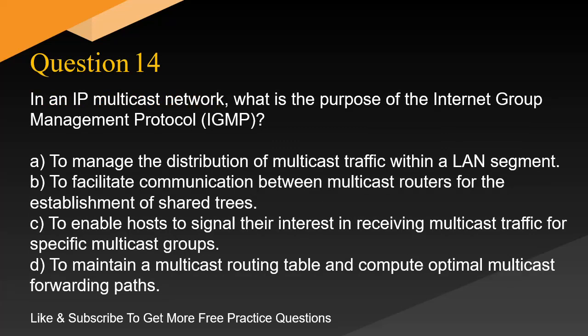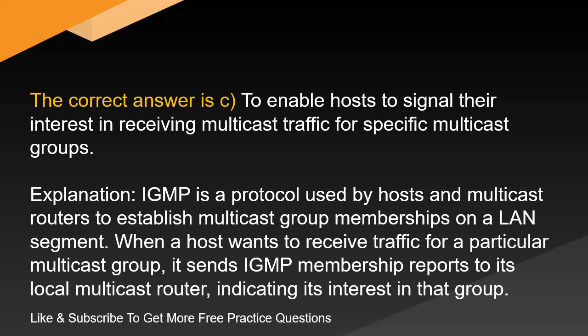Question 14. In an IP multicast network, what is the purpose of the Internet Group Management Protocol, IGMP? A. To manage the distribution of multicast traffic within a LAN segment. B. To facilitate communication between multicast routers for the establishment of shared trees. C. To enable hosts to signal their interest in receiving multicast traffic for specific multicast groups. D. To maintain a multicast routing table and compute optimal multicast forwarding paths. The correct answer is C: to enable hosts to signal their interest in receiving multicast traffic for specific multicast groups. IGMP is a protocol used by hosts and multicast routers to establish multicast group memberships on a LAN segment. When a host wants to receive traffic for a particular multicast group, it sends IGMP membership reports to its local multicast router, indicating its interest in that group.